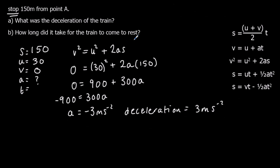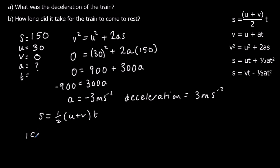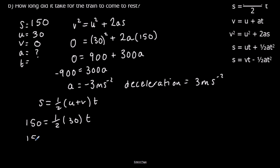How long did it take for the train to come to rest? If we pretend we didn't know A, we'd use the equation without A in it: S equals half(U plus V) times T. Substituting: 150 equals half times (30 plus 0) times T, so 150 equals 15T. Dividing both sides by 15, T is 10 seconds.